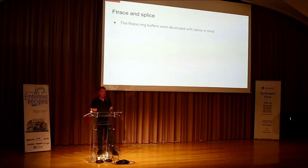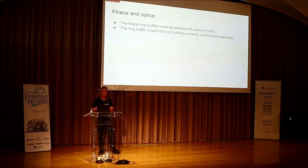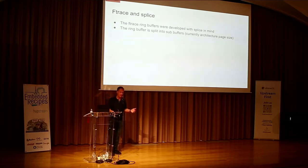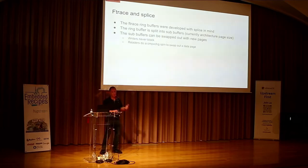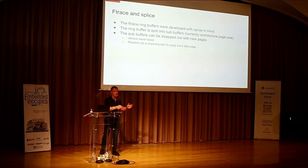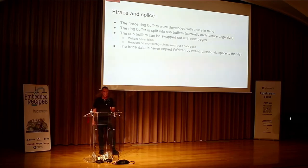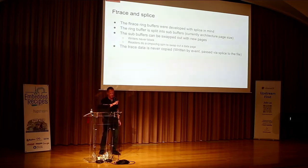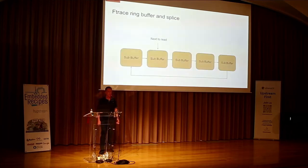The ring buffers were developed in FTrace with splice in mind. They are broken up into sub-buffers — currently page-sized by the architecture, which is 4K on x86 and 64K on PowerPC 64. These are made so you can do zero copy — you can swap pages out of the ring buffer directly. The writer doesn't have any locks; there's no locking during writes. The trace data is never copied. Written events go directly into the ring buffer, and then TraceCMD does splice to move it — true zero copy.